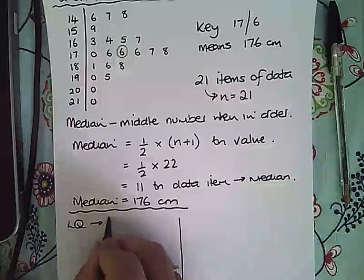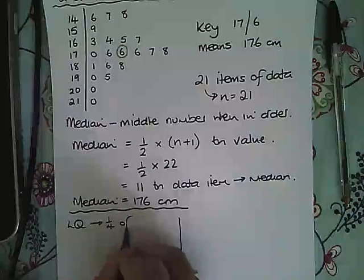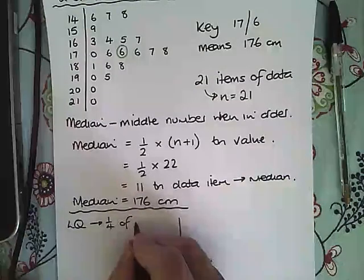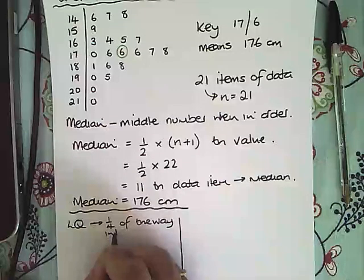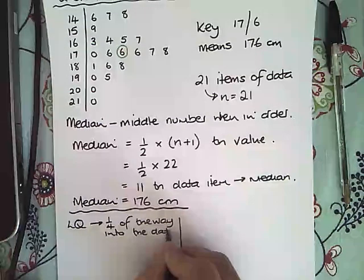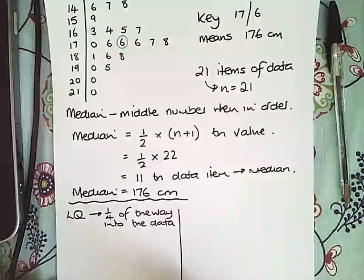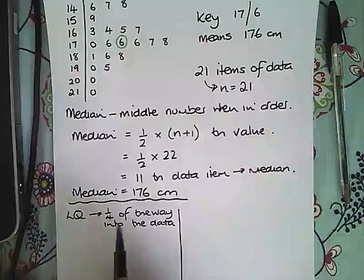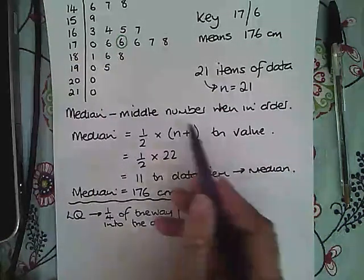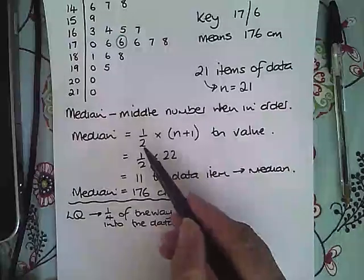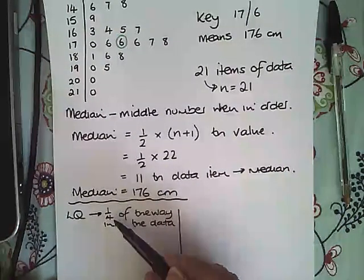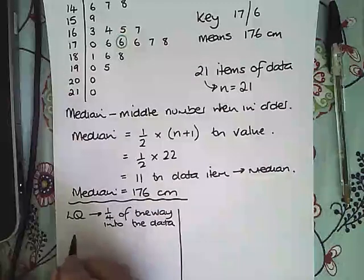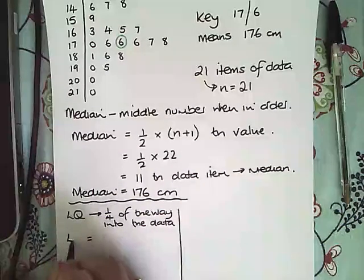We find that value, the lower quartile number, by using a similar formula to this except instead of a half, now because we're going a quarter of the way into the data, we're going to put a quarter there. So that is going to be found, the lower quartile, by doing 1/4 times n plus 1.